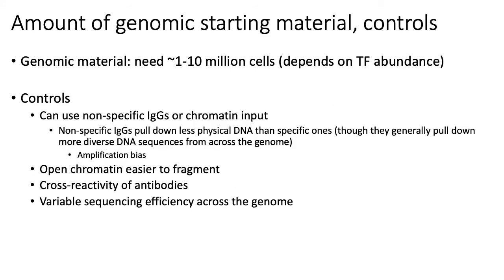Besides the challenge of acquiring a good antibody against your TF of interest, another challenge is the amount of genomic material needed for a ChIP-seq experiment. Typically, depending on the concentration of your transcription factor and how frequently it binds across the genome, you might need on the order of one to ten million cells as input into your ChIP-seq protocol to successfully get enough reads to identify the binding sites.